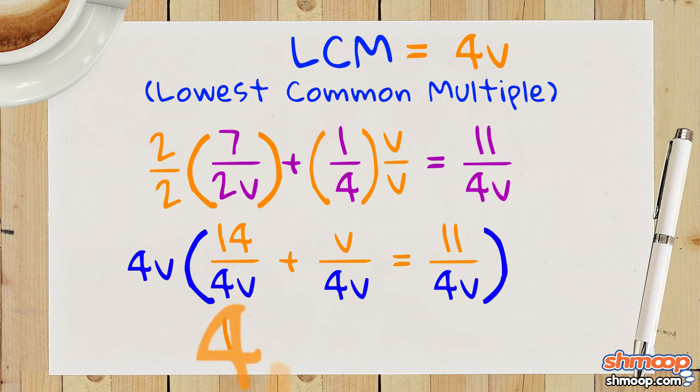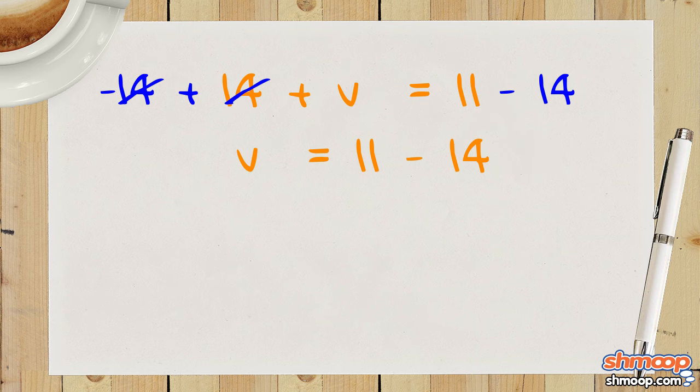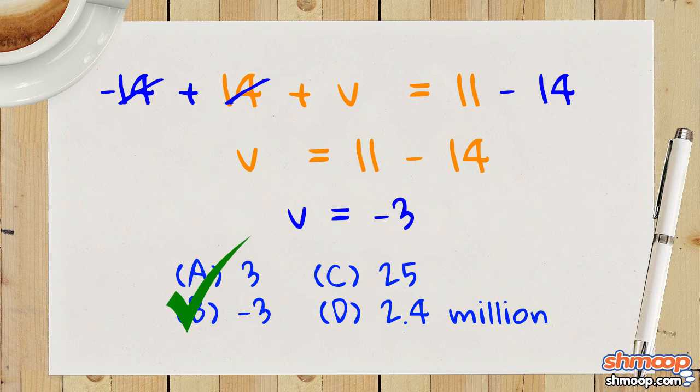Now we're left with 14 plus V equals 11. Subtract 14 from both sides to isolate V. V equals 11 minus 14, which is negative 3. So the answer is B.